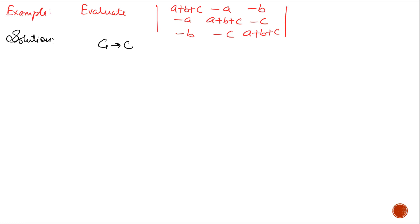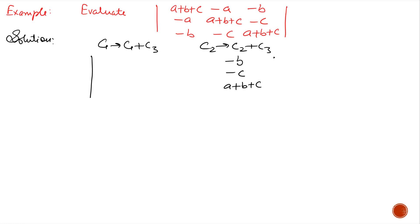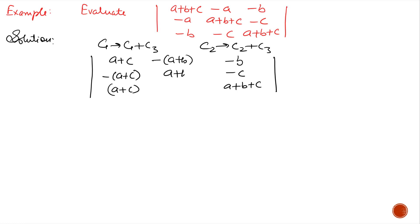First we use the operations c1 replaced by c1 plus c3, and c2 replaced by c2 plus c3. The third column will remain the same. In the first column we will get (a+c), (a+c), (a+c), and using the operation c2 = c2 + c3 we will get in the second column -(a+b), (a+b), and (a+b).